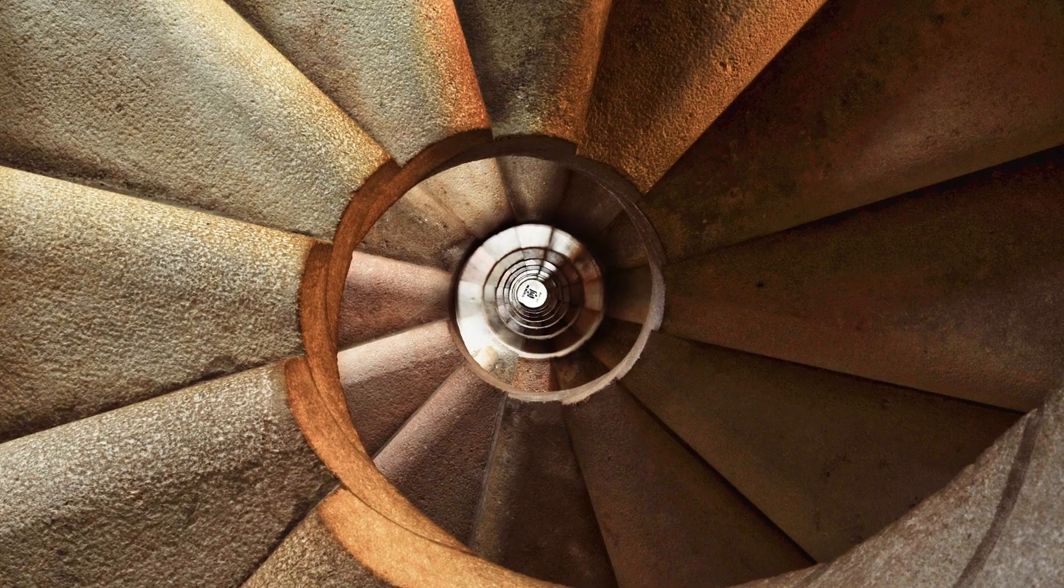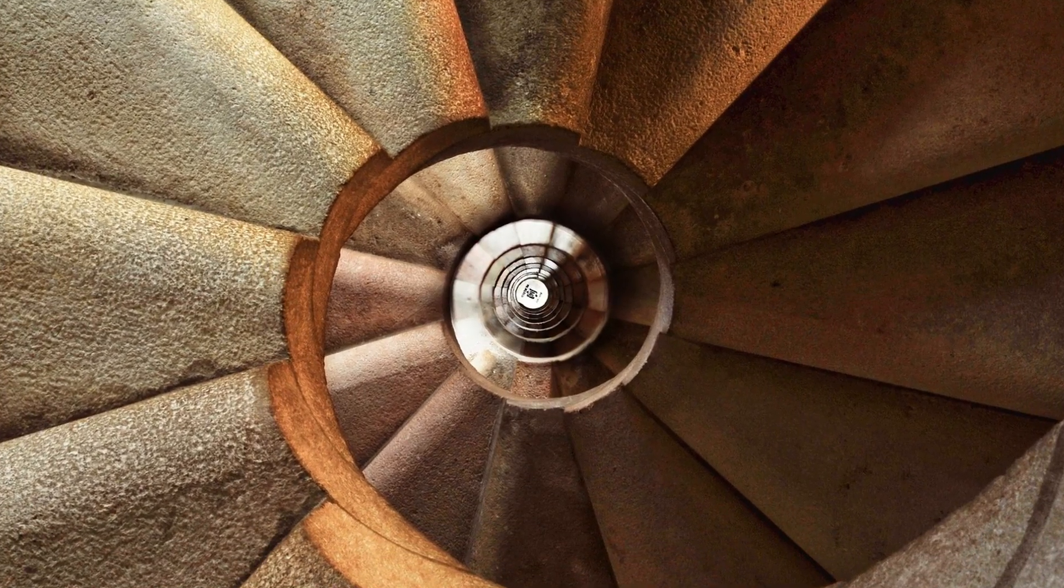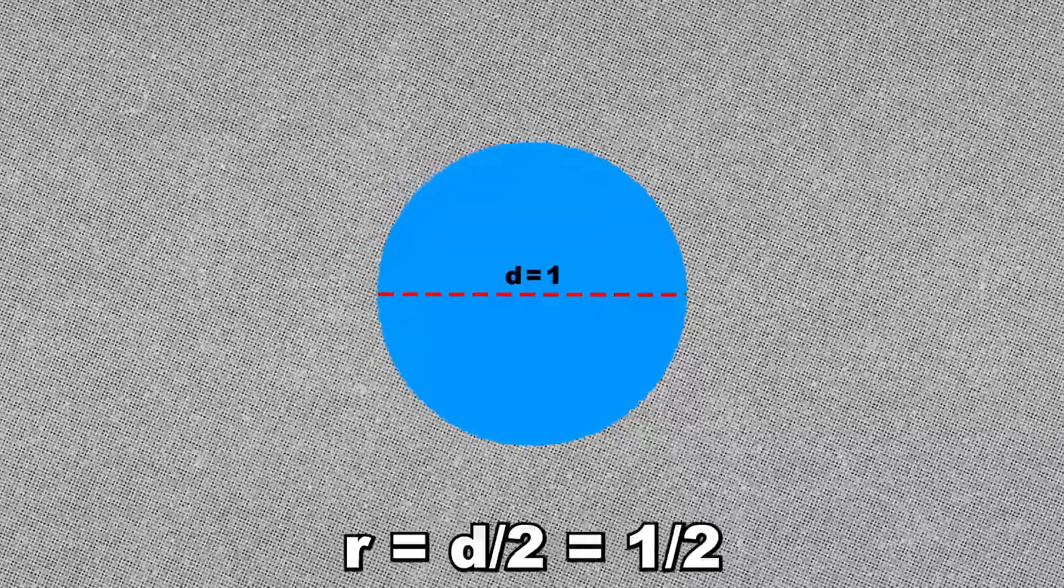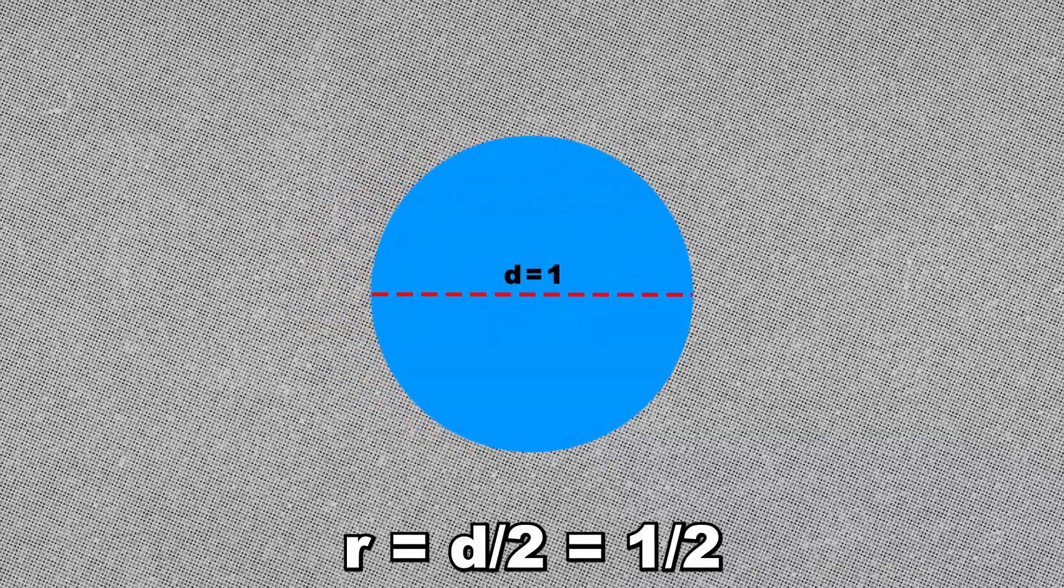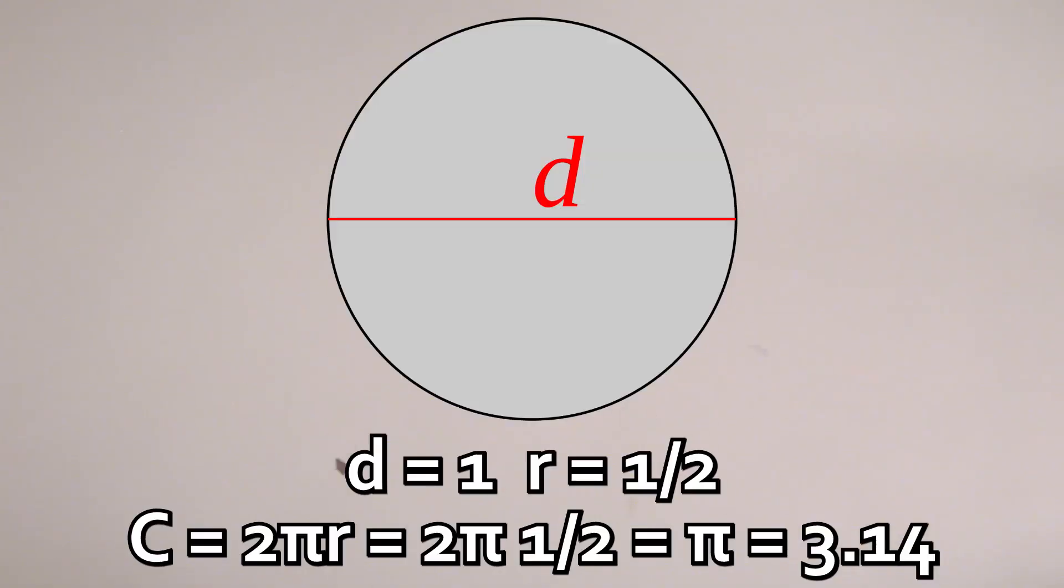Maintaining a perimeter of four while gradually approaching the circle's shape, after doing the same process infinite times, the resulting zigzags appear to become the circle itself. Since the diameter of this circle is one and its radius is one half, its circumference is equal to pi itself.